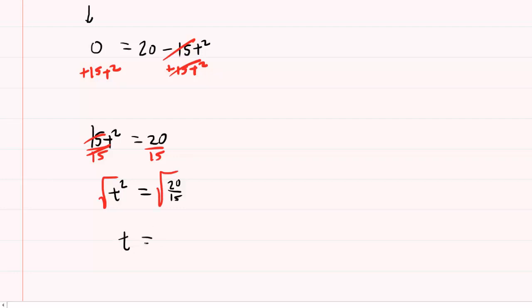So t will equal the square root of 20 fifteenths, and if you put that into a calculator you will get about 1.15 seconds. So this would be the correct answer for part A.